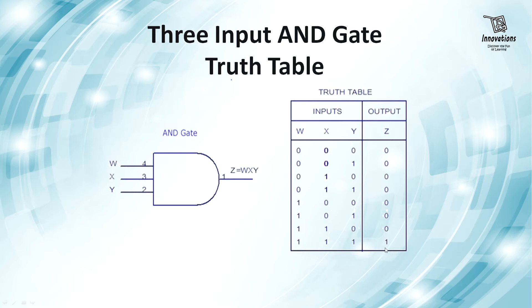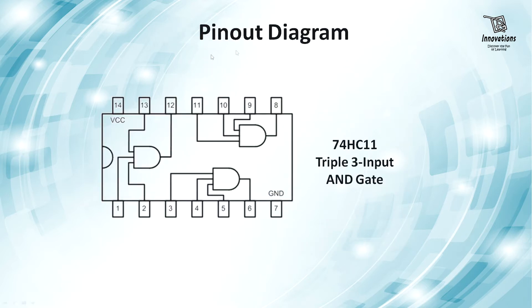So this is the truth table of a three input AND Gate. Now we will have a look at the schematic of 7411 IC. 7411 is a 14 pin IC, where pin number 1, 2 input, pin number 13 input, pin number 12 is output for AND Gate segment 1. AND Gate segment 2 has input pin number 3, 4 and 5 and output is 6.